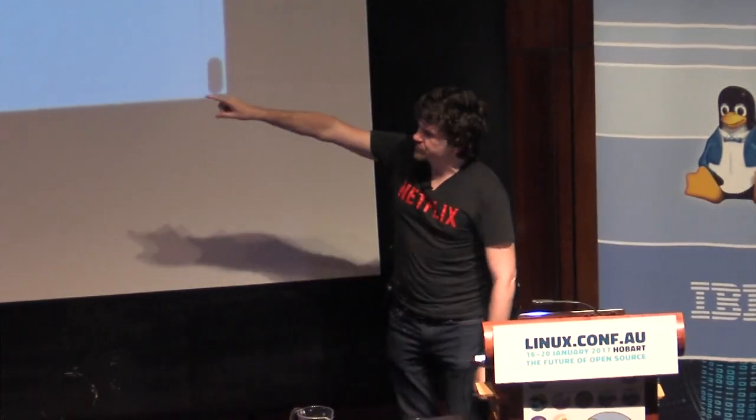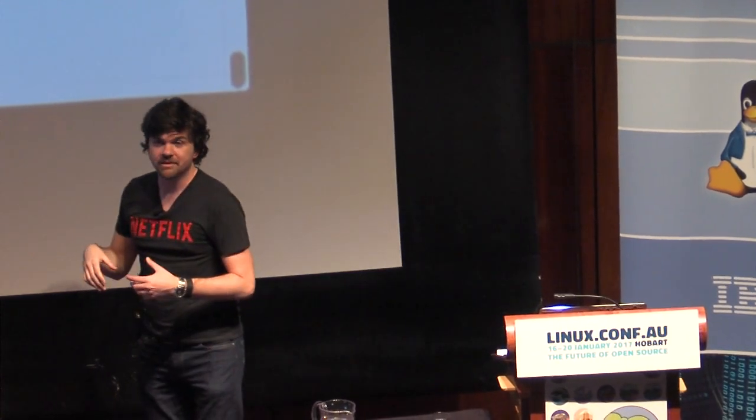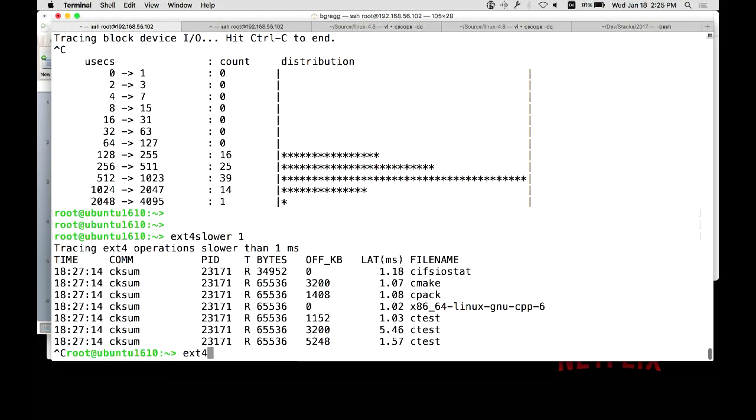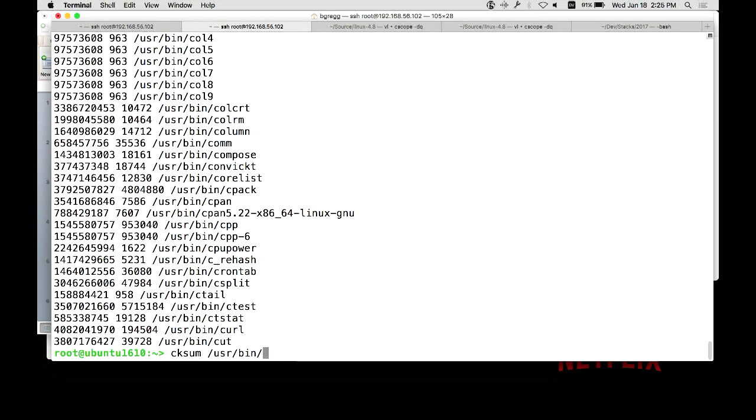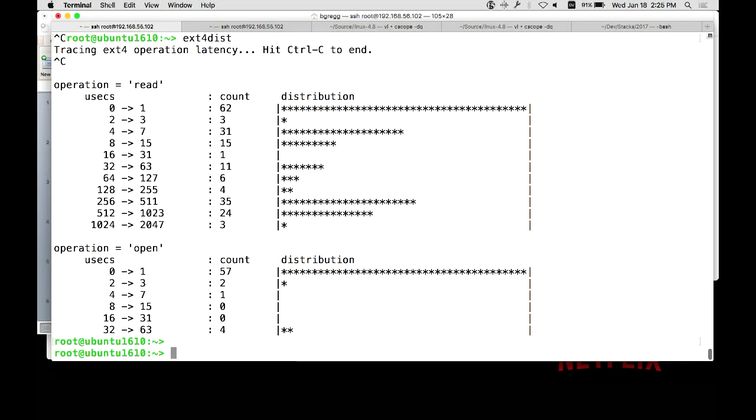This, in fact, not just covers the disk IO latency, but anything in the file system, so this could be file system lock latency. And I've worked on those types of bugs in the past. And I can summarize it too. I can do ext4dist. And so that's giving me the distribution by type of operation. I can see quickly there's a bimodal distribution for opens and multiple modes for reads.